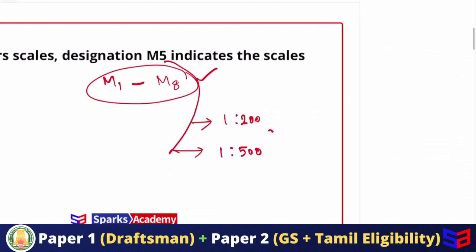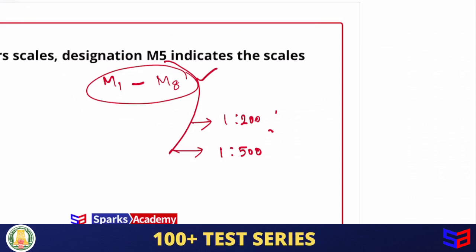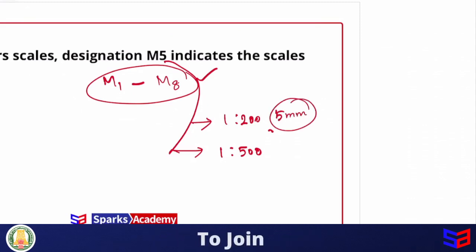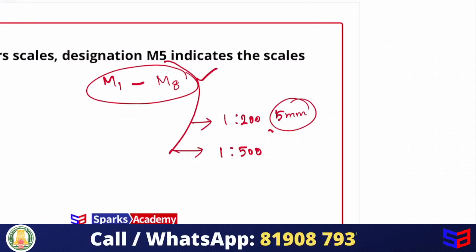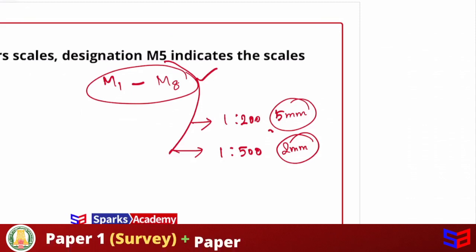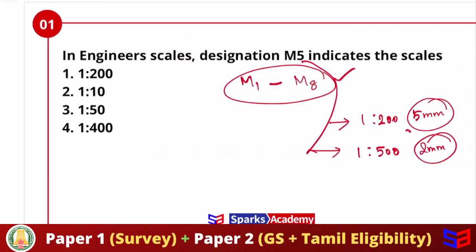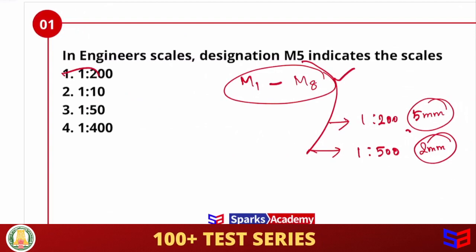M5 has two scales: one is to 200 and the other is one is to 500. For example, if you want to represent 1 is to 200, you can represent 1 meter length. So in M5 designation, the answer from the given options is one is to 200. The answer is the first option.